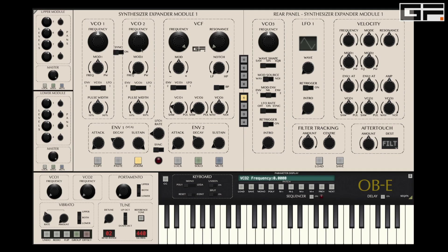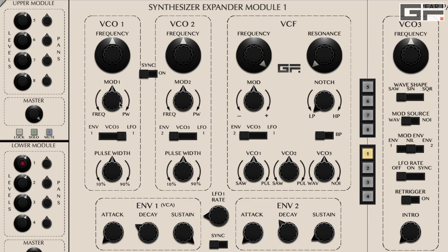Modulation of VCO1 and 2 is determined by the mod 1 and 2 knobs respectively. The source of which is determined by the switch underneath. Turning the mod 1 and 2 knobs counterclockwise introduces frequency modulation in accordance with the setting in the source switch below.